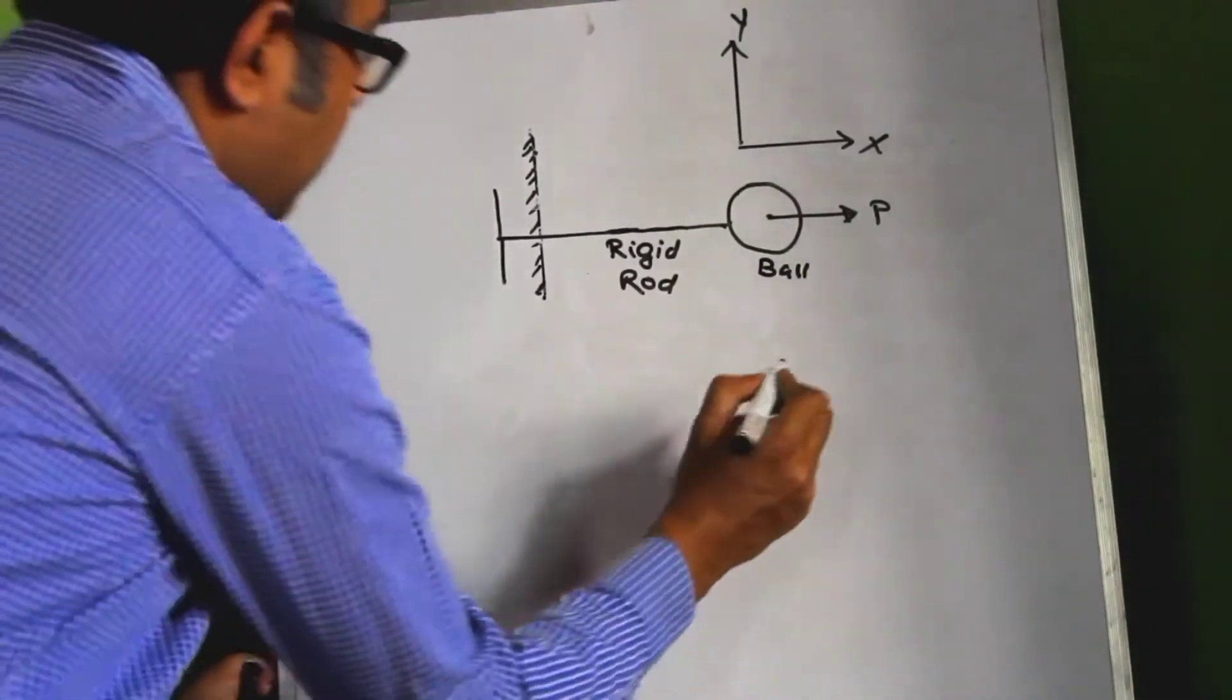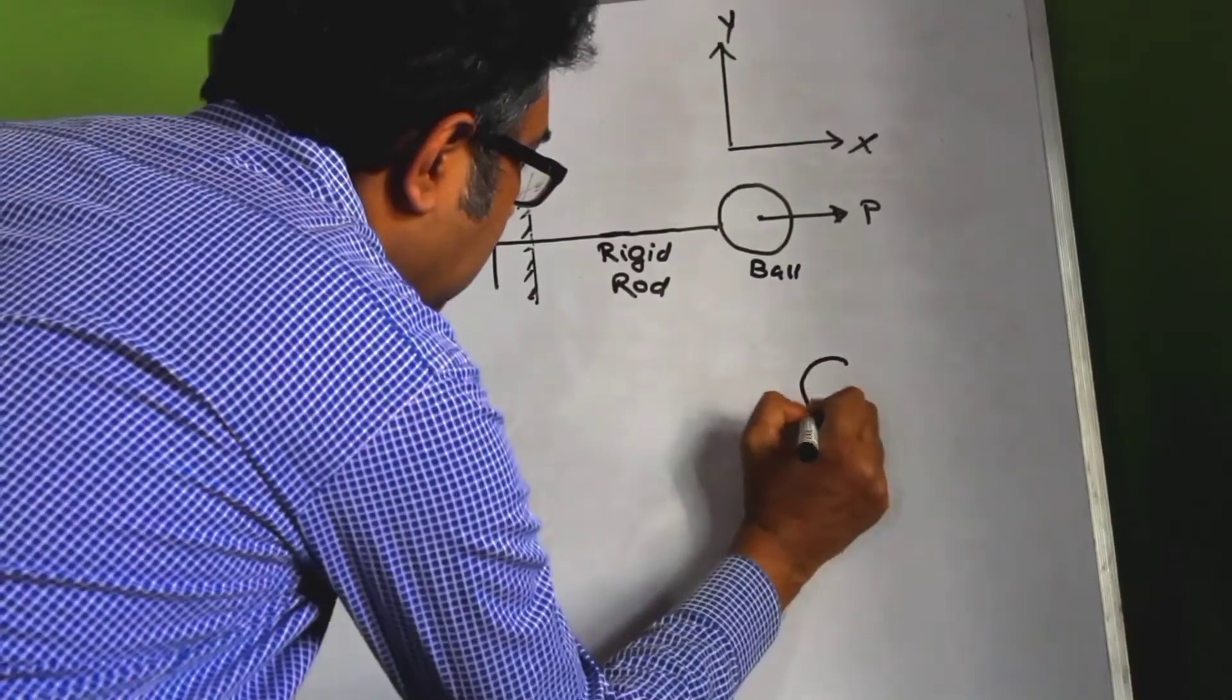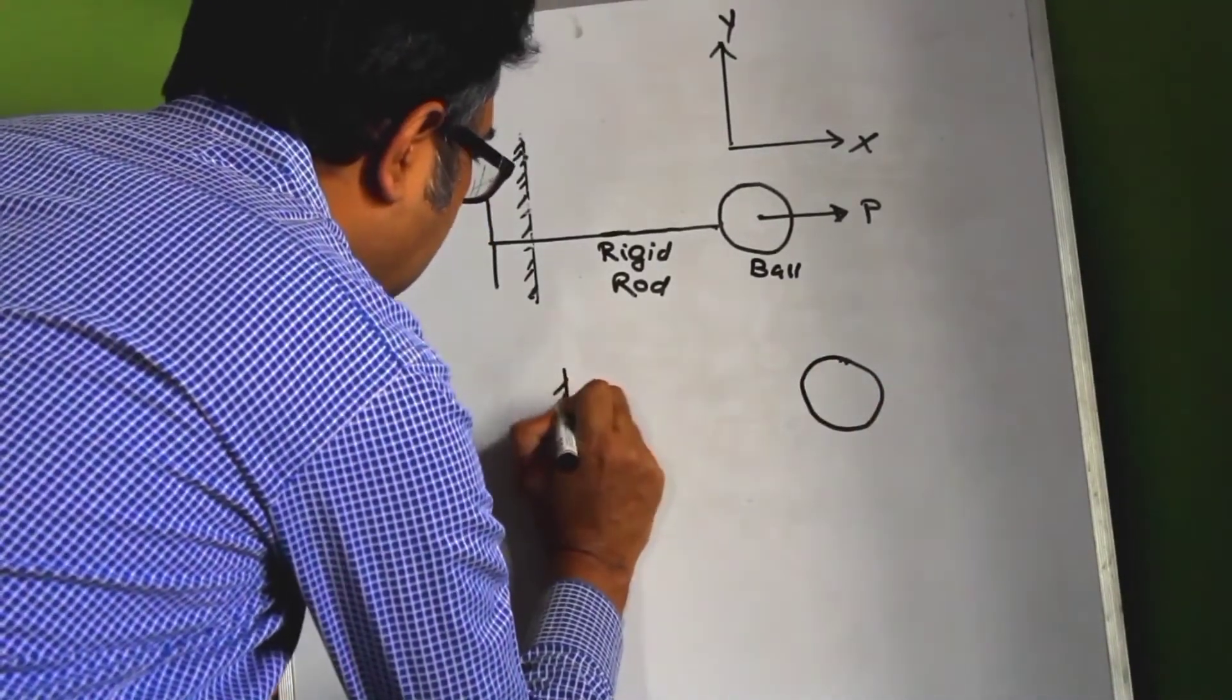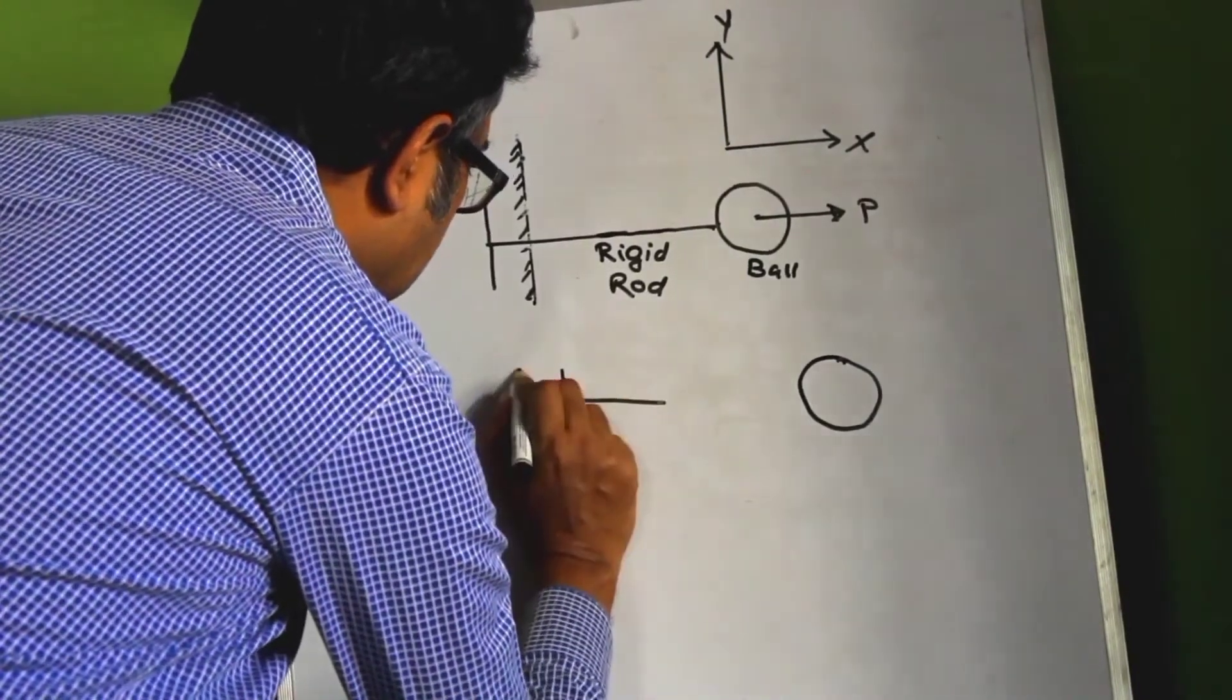Let us conceptually separate this ball and this rigid rod. We do it in our minds. So this is the rigid rod, we separate the two.